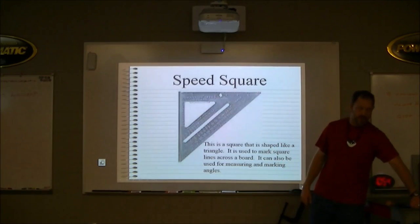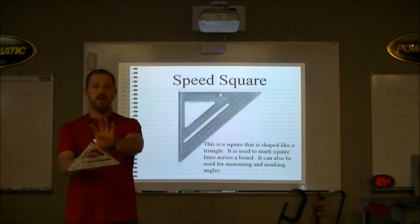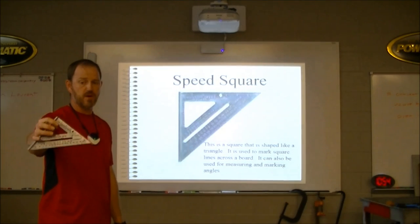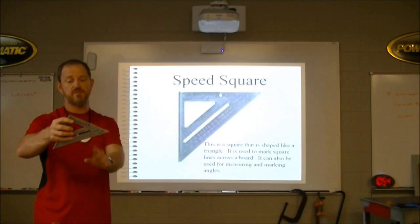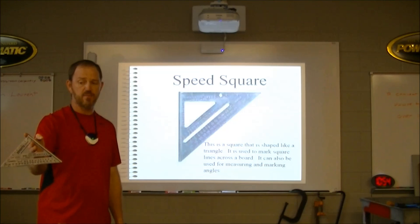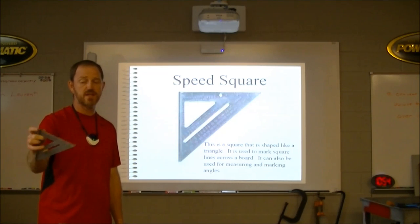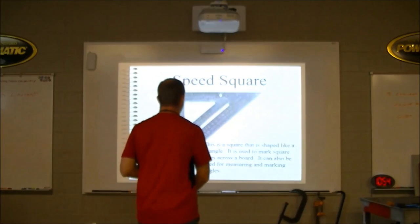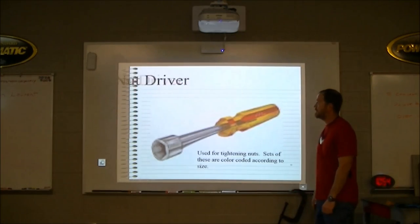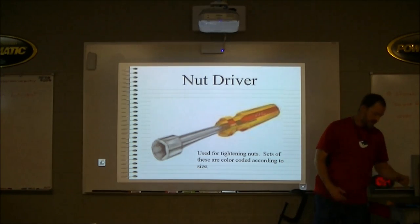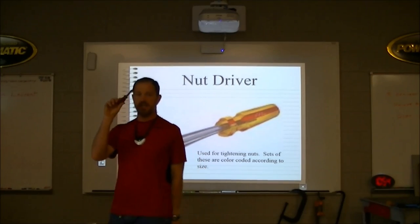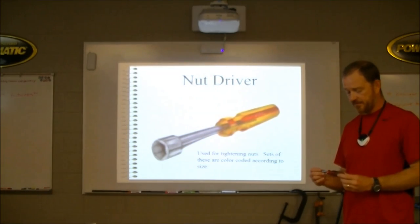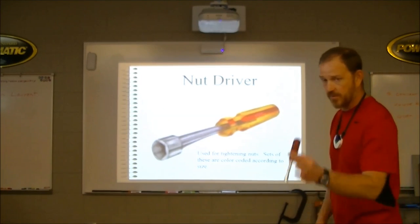Here's the speed square — it's a square shaped like a triangle with a lot of uses. A lot of times we use it to just mark a square line across a board, but you can also mark angles, hips and valleys, and common rafters. In this class we'll mostly be marking angles with it. A nut driver is similar to a socket but shaped like a screwdriver — you put it on a nut or bolt and just twist it. These are commonly used by electricians.